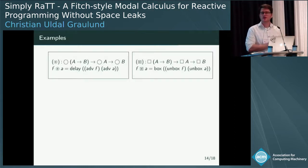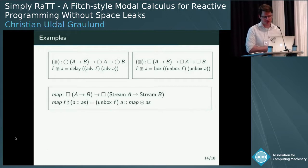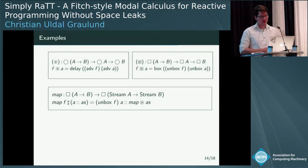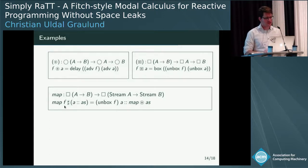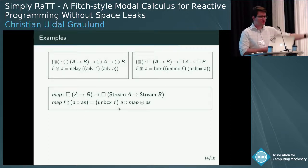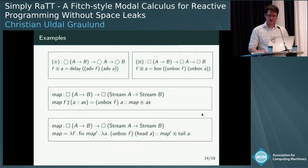Here are some examples in the actual language. Both circle and box are applicatives, which is nice and easy to program with. For the map function, you take a function — which must be stable since you apply it at each step and need to push it safely into the future — so it comes before the hash. You get your stream, unbox the function to pull it into whatever time step you're in, and then recurse with an applicative call to make the delay work out.